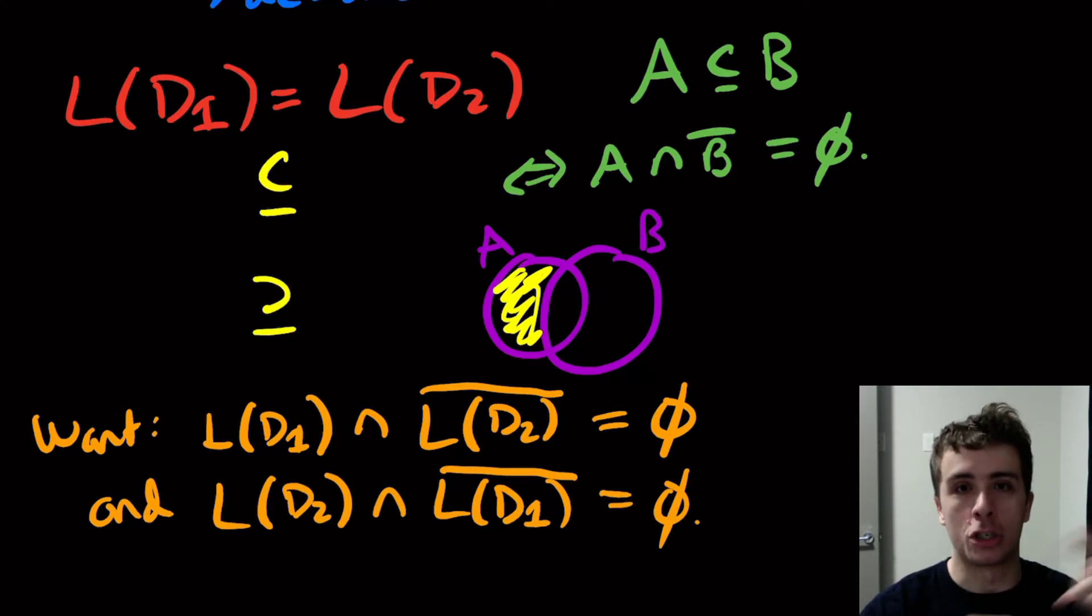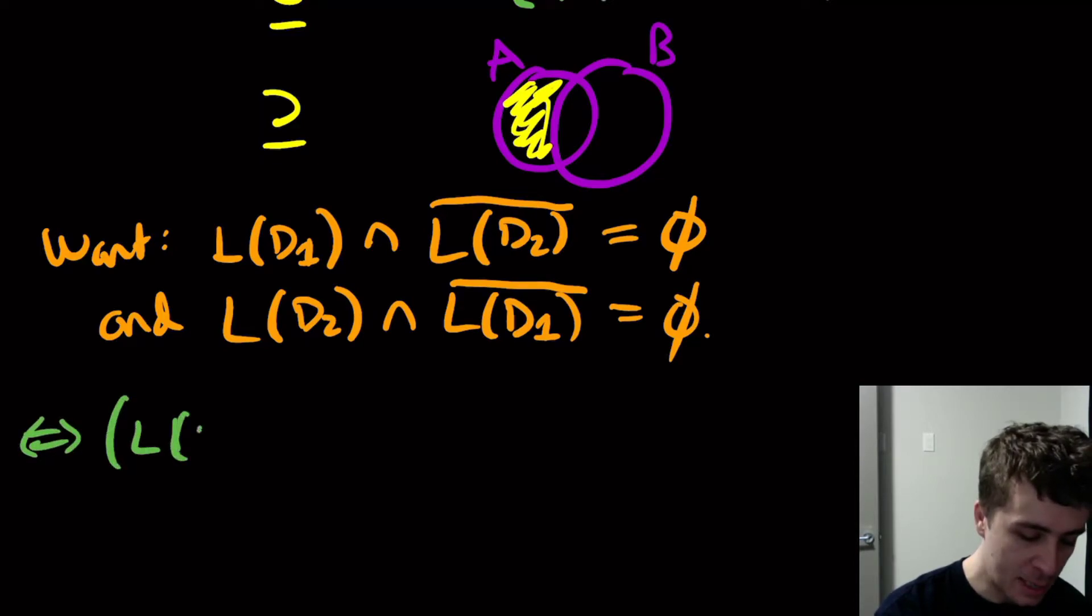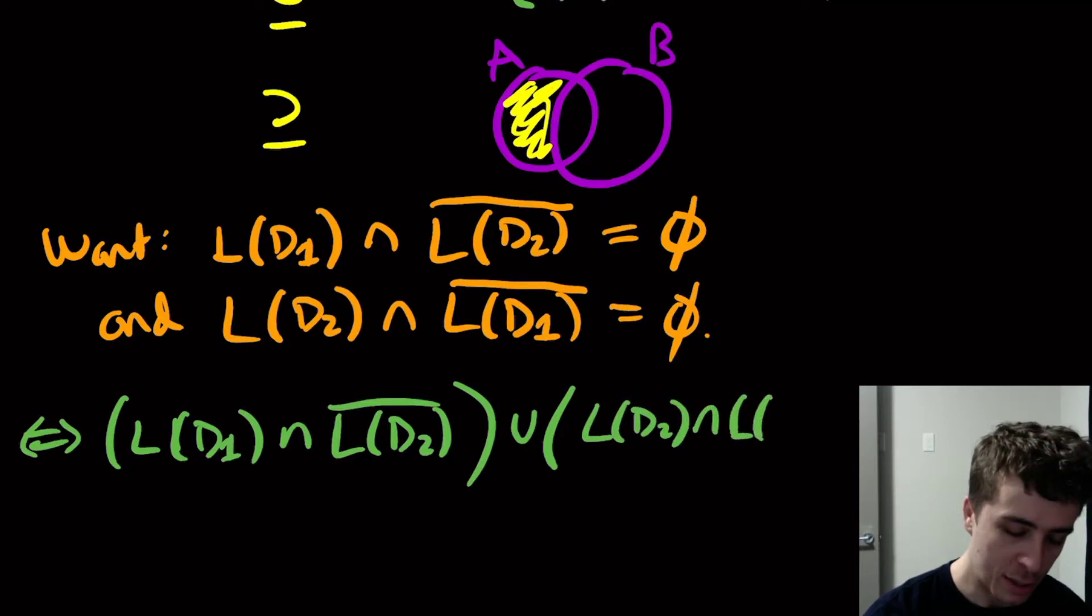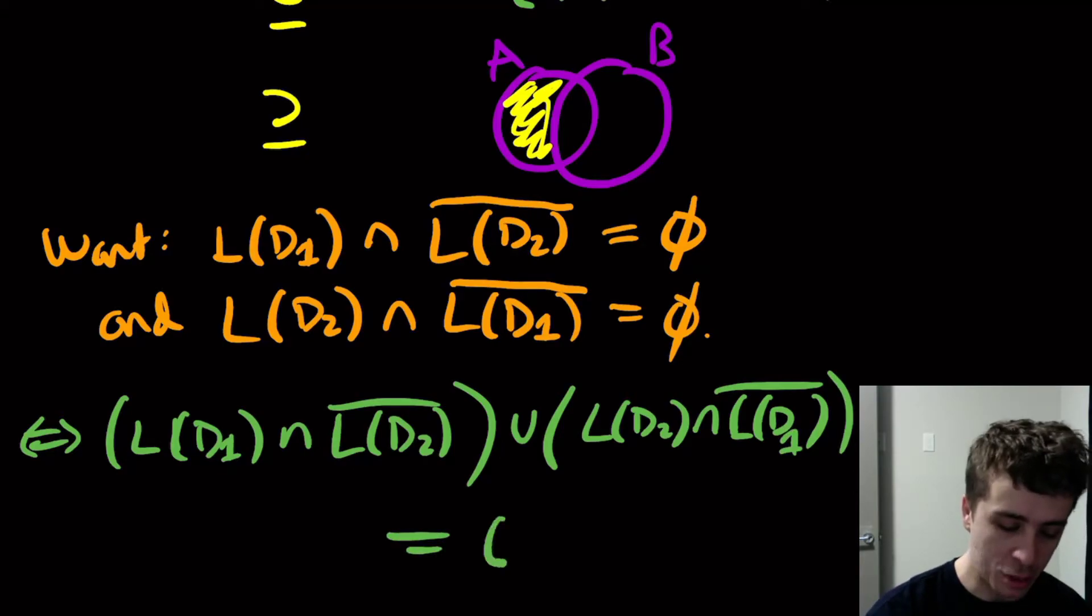You might think, let's just do the intersection of both of these sets. It turns out that we need to do the union of the two sets. This is the same thing as saying that if I take the first one, I want to be empty, I'm going to union that with the other guy. So D2 intersection D1 complement, and so I want this whole thing to be empty.